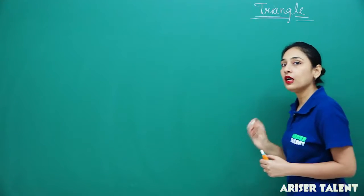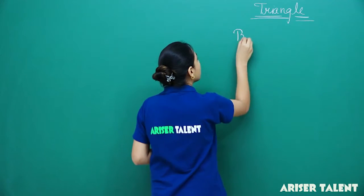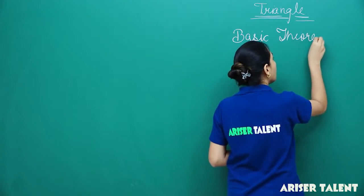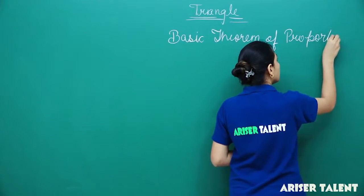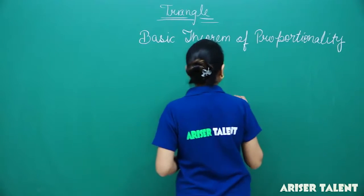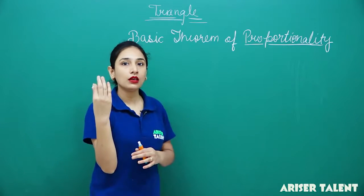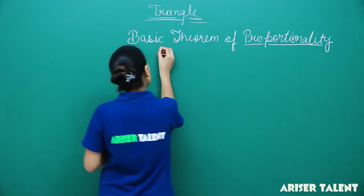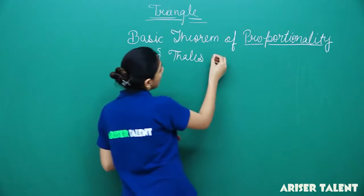So we have the Basic Theorem of Proportionality. Now, you can see we have used this word 'proportionality', so basically it will involve proportions in this particular theorem. Secondly, we call it Thales' theorem.